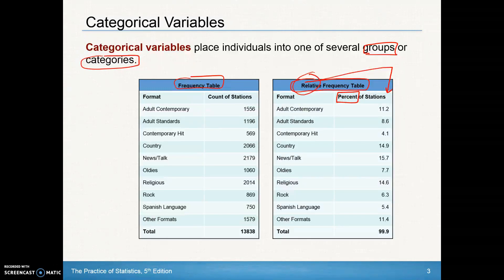Going back here, identifying the variable. The variable is the format of the radio station. Those variables take on different values, such as adult contemporary, adult standards, oldies, rock, etc.